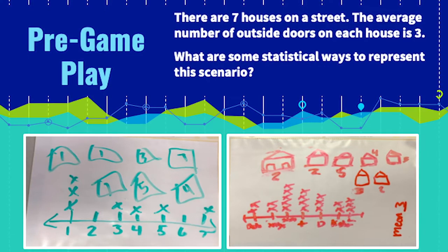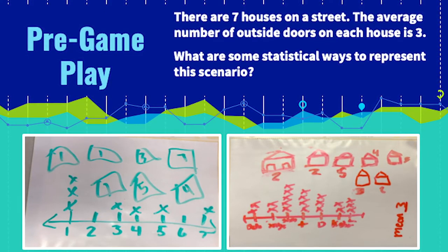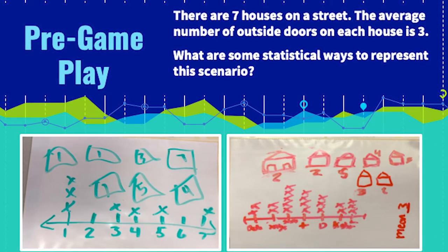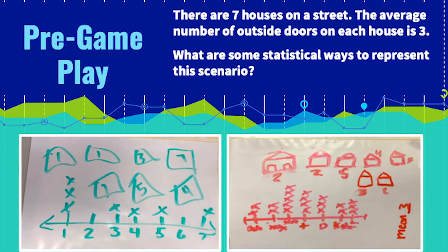Pause the video to think about this. Are there any other ways you can represent seven houses with an average number of three outside doors? Look at the examples provided for ideas.